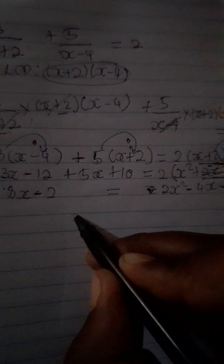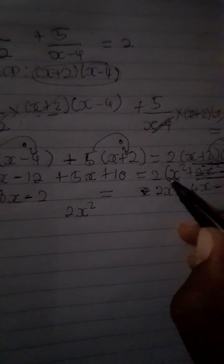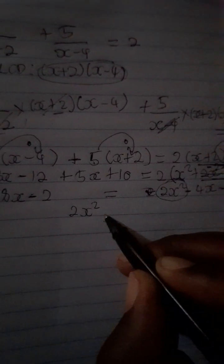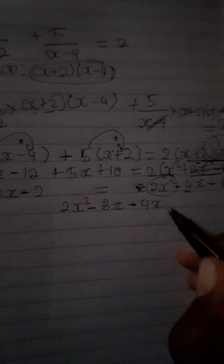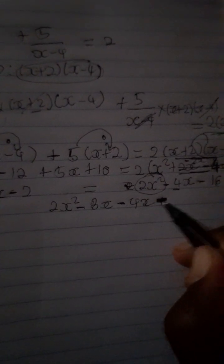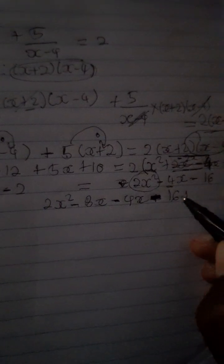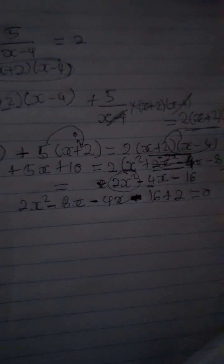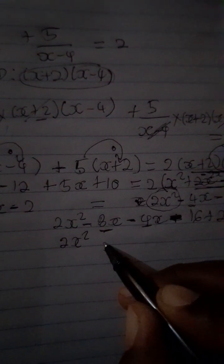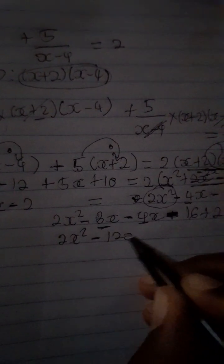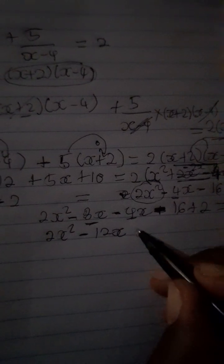Now collect like terms. Bring 8x to the other side: we have 2x² then −8x − 4x. Take −2 to the other side; it becomes +2, so we have −16 + 2 = −14. Remember, when you transpose a number it changes sign — negative becomes positive and positive becomes negative. This gives us 2x² − 12x − 14 = 0.